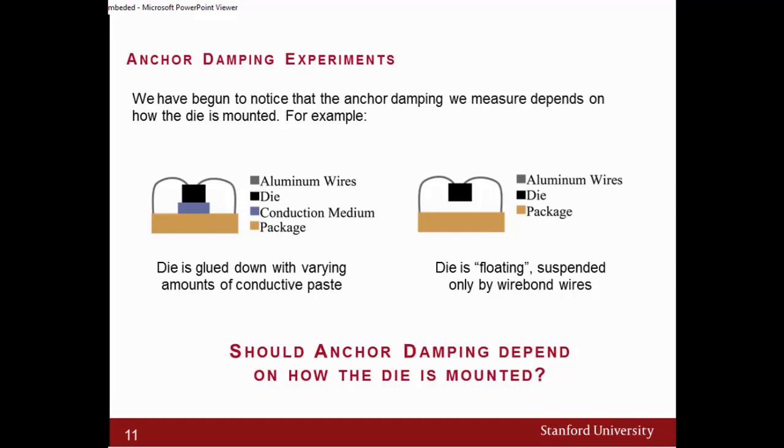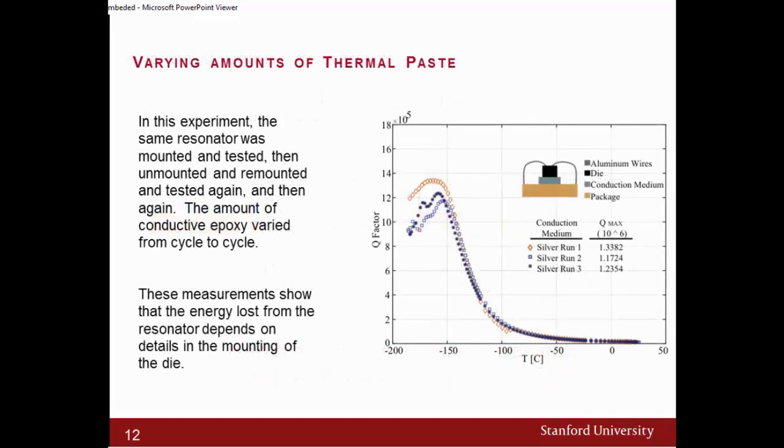The question here is: would mounting the resonator in these two different configurations change our Q-anchor? Well, to answer this question, we performed a series of experiments. For the first set of experiments, this is what we found. We found that we attached the die, we glued it to the package, and then we took a set of experiments, and then we got a Q-anchor. Then we removed the die, exactly the same die, and then we reattached it again with the same thermal paste, and we took a second set, and so on and so forth.